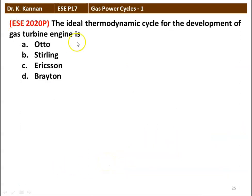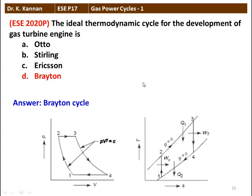The next question: the ideal thermodynamic cycle for the development of a gas turbine engine — options are Otto cycle, Stirling cycle, Ericsson cycle, and Beretron cycle. The correct option is the Beretron cycle. The Beretron cycle consists of: 1 to 2 reversible adiabatic compression, 2 to 3 constant pressure heat addition, 3 to 4 reversible adiabatic expansion, and 4 to 1 constant pressure heat rejection.